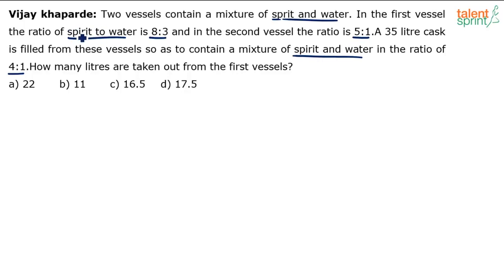What is the concentration of spirit in the first one? See, it is 8:3, so I can say 8 out of 11 parts. 8 parts out of 8 plus 3, 11 parts. In the second one, the ratio is 5:1. So, what's the concentration of spirit? 5 parts out of 5 plus 1, 6 parts. In the overall mixture, the ratio is 4:1. So, what will be the concentration of spirit? 4 parts out of 4 plus 1, 5 parts.